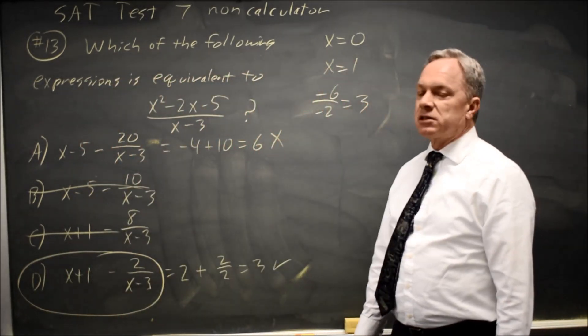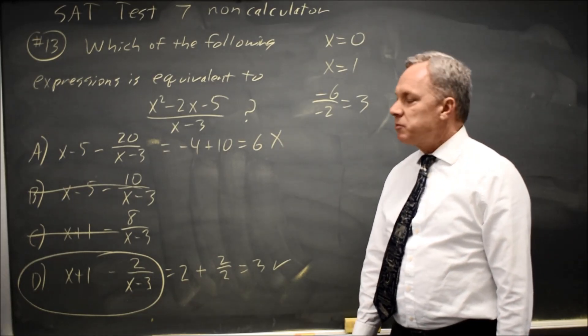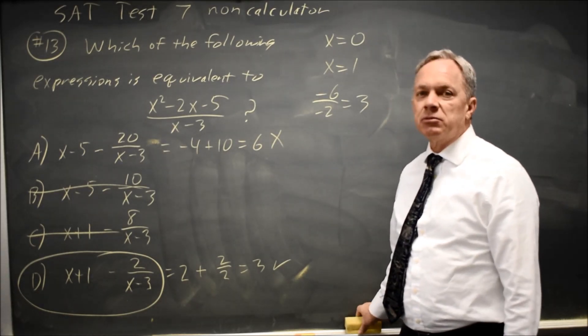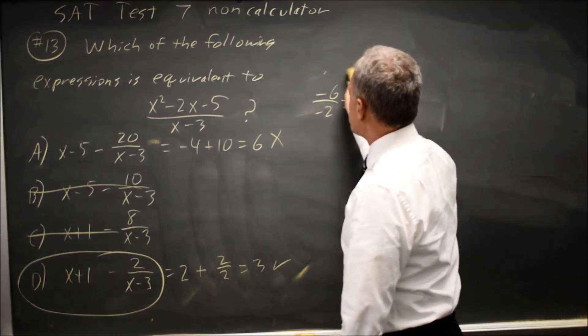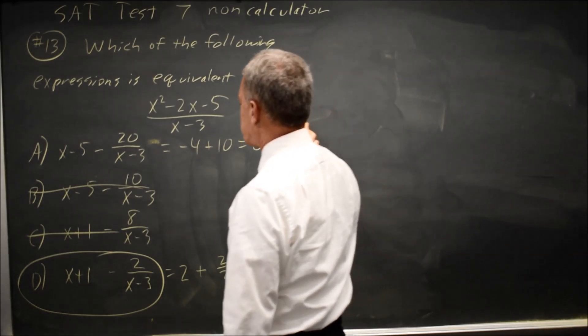In this case, long division or synthetic division might be more efficient if you're good at those. But substituting in numbers changes this to arithmetic, which is a better option for many of us when we're under time pressure.